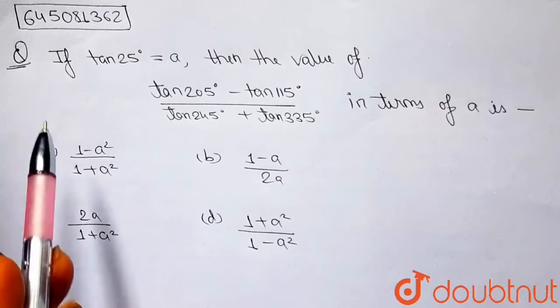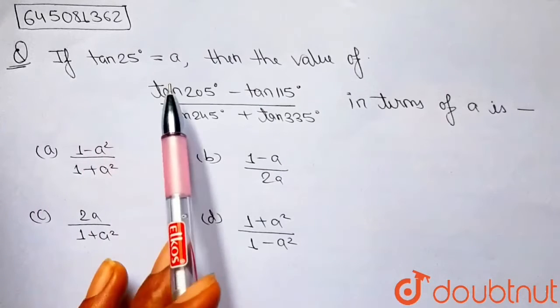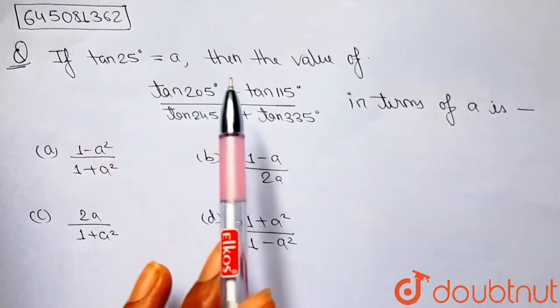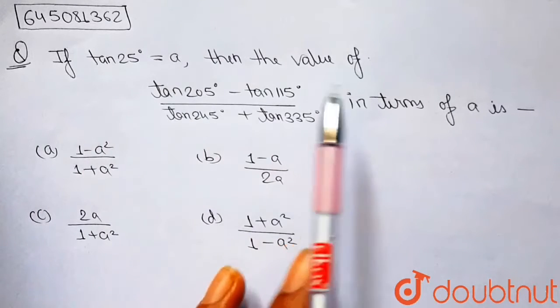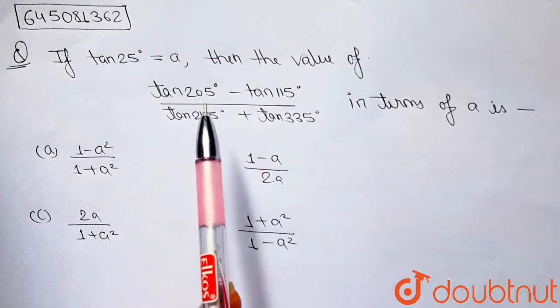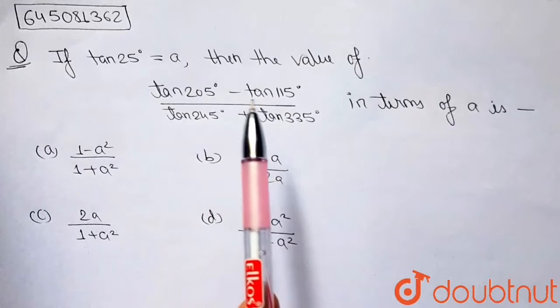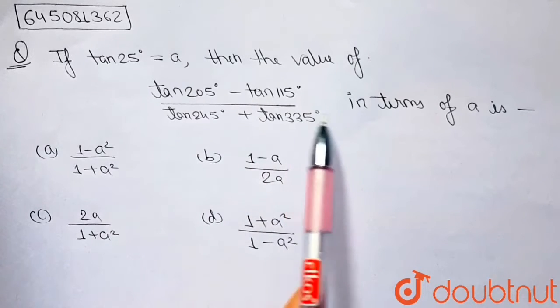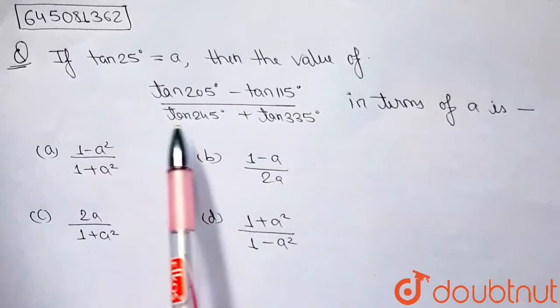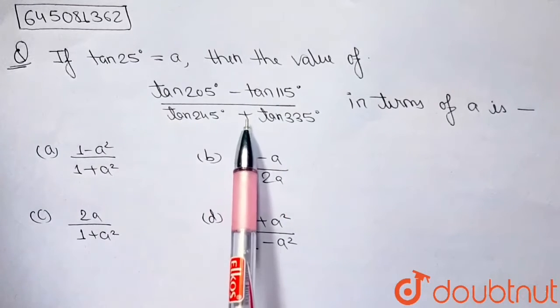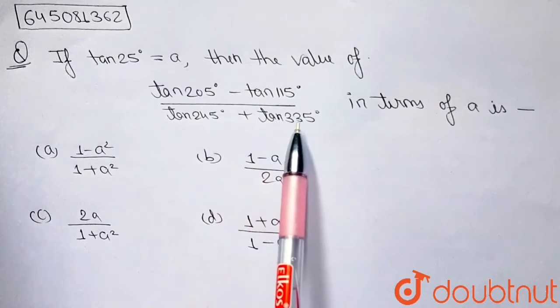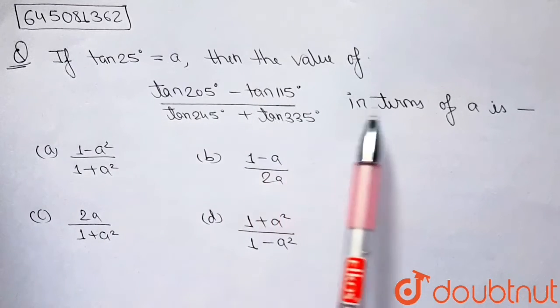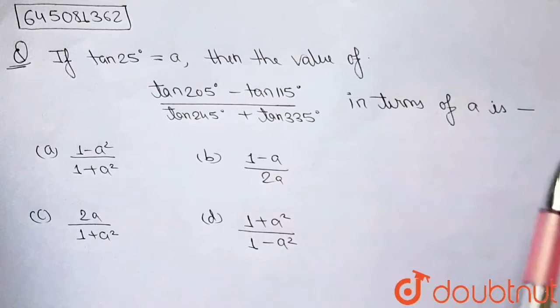It says that if tan of 25 degrees is equal to a, then find the value of tan(205°) minus tan(115°) divided by tan(245°) plus tan(335°), expressed in terms of a.